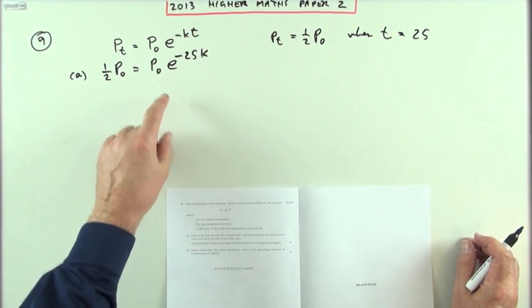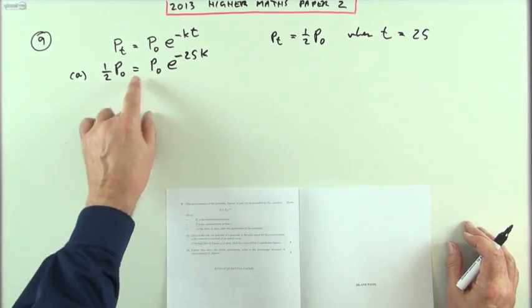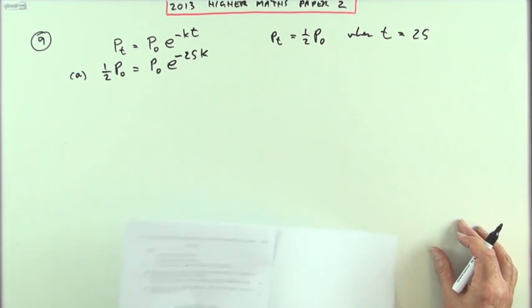You could have chosen values for p-naught if you liked, because in the end, they're just going to cancel out. That's the whole point of this.